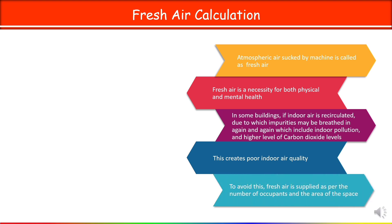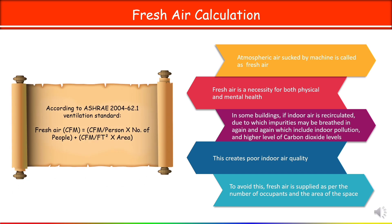This will create poor indoor air quality. To avoid this, fresh air is supplied as per the number of occupants and the area of the space. According to ASHRAE 62.1 Ventilation Standard, the formula is: fresh air CFM equals CFM per person times number of people, plus CFM per square feet times area of that space in square feet.